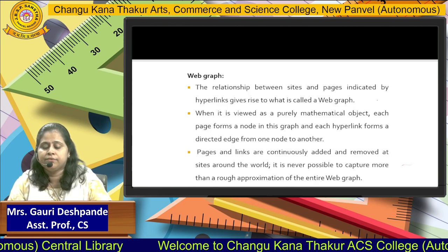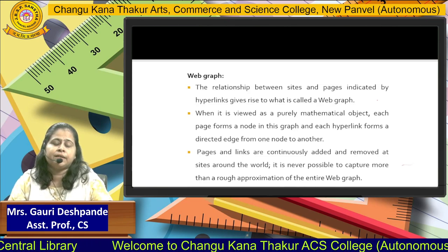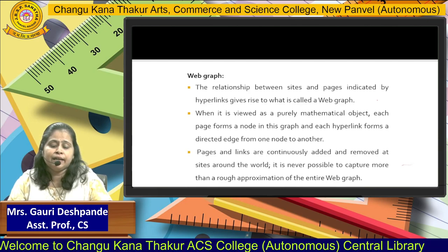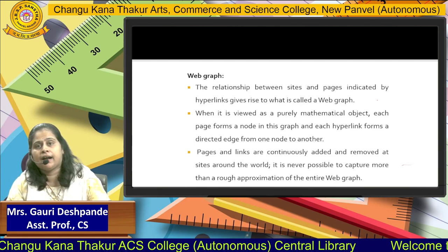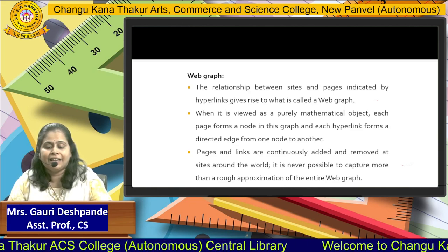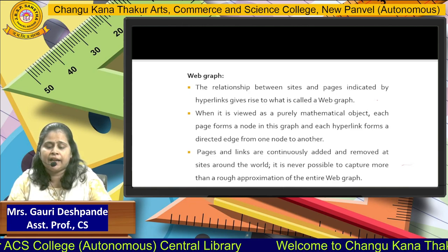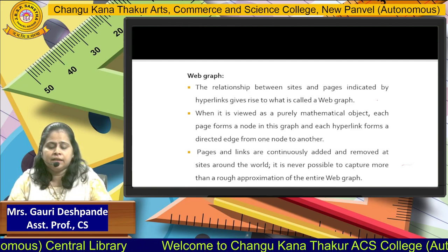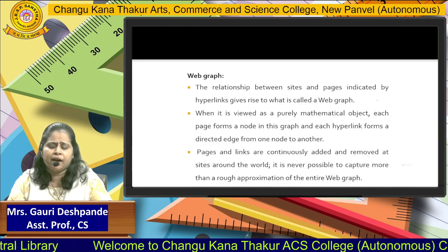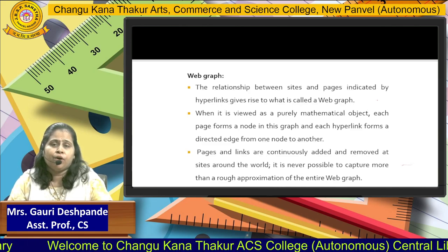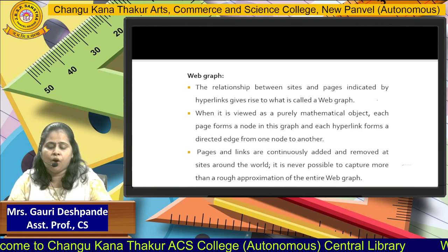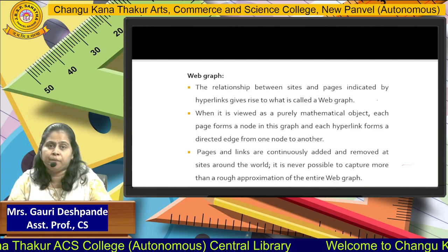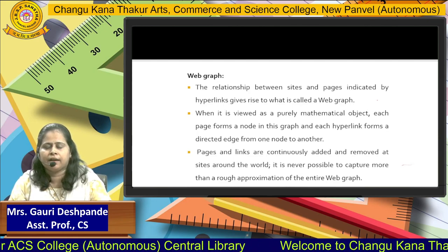A web graph is nothing but the relationship between sites and pages indicated by hyperlinks. In short, a web graph is the collection of web pages which are interconnected with the help of hyperlinks. Using that web graph we can find out entities or documents in terms of objects. Those objects are connected with each other — suppose there are five documents and those five documents are connected with each other.